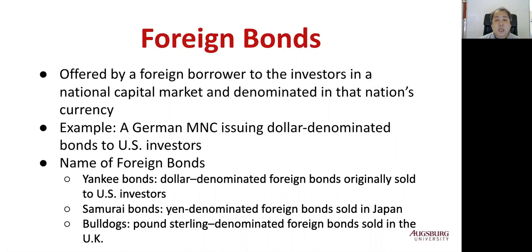Similarly, if a US firm issues euro-denominated bonds in a eurozone country such as Germany, and to German investors, that is a foreign bond in Germany. Foreign bonds have unique names for major currencies: a Yankee bond is a dollar-denominated foreign bond sold in the United States; a Samurai bond is a yen-denominated bond in Japan; and a Bulldog bond is a pound sterling-denominated bond sold in the United Kingdom.